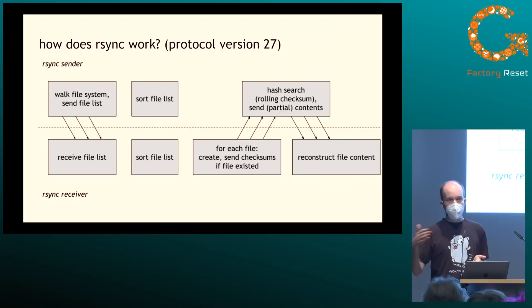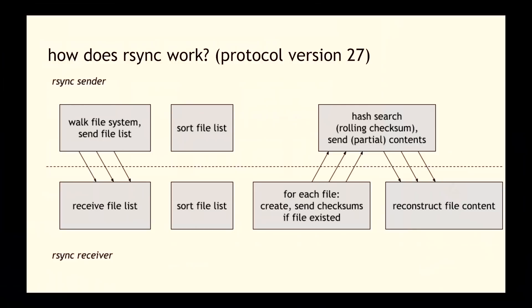I have a sketch here of protocol version 27. Later protocol versions got a lot more complex — in fact most alternative rsync implementations, like OpenRsync from the BSD world, implement protocol version 27 because it gets you most of the way with diminishing returns afterwards. In protocol version 27, the top side is the rsync sender and the bottom half is the rsync receiver. The protocol works in one direction but the roles of sender and receiver are not tied to client-server roles — both sides can be sender or receiver.